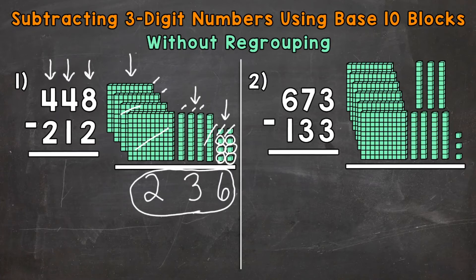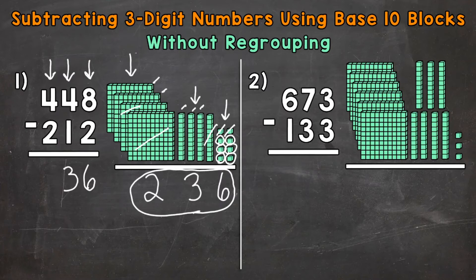Let's solve this to the left as well without the base 10 blocks and see if we get the same answer. Start with the ones: 8 minus 2 gives us a 6 in the ones. Move to the tens: 4 tens minus 1 ten gives us a 3 in the tens place. And then lastly the hundreds: 4 hundreds minus 2 hundreds — 4 minus 2 gives us 2, and we get 236 over there as well. The base 10 blocks helped us visualize and really see what's going on within this subtraction problem.